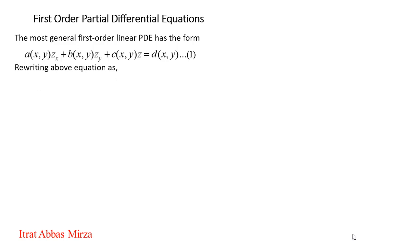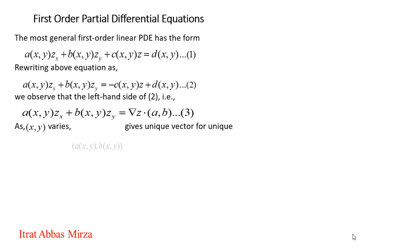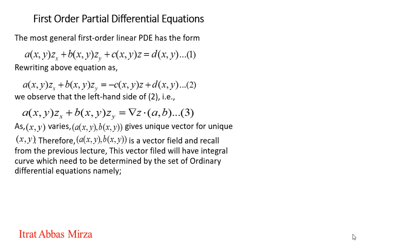Rewrite the above equation as: a z_x plus b z_y equal to minus c z plus d — call this equation two. The left-hand side of equation two can be written as the gradient of z dot product with the vector (a, b), where (a, b) is the vector a i plus b j. Since a and b are functions of x and y, as x and y vary, the vector (a(x,y), b(x,y)) gives a unique vector for each point. Therefore, a(x,y), b(x,y) can be regarded as a vector field.